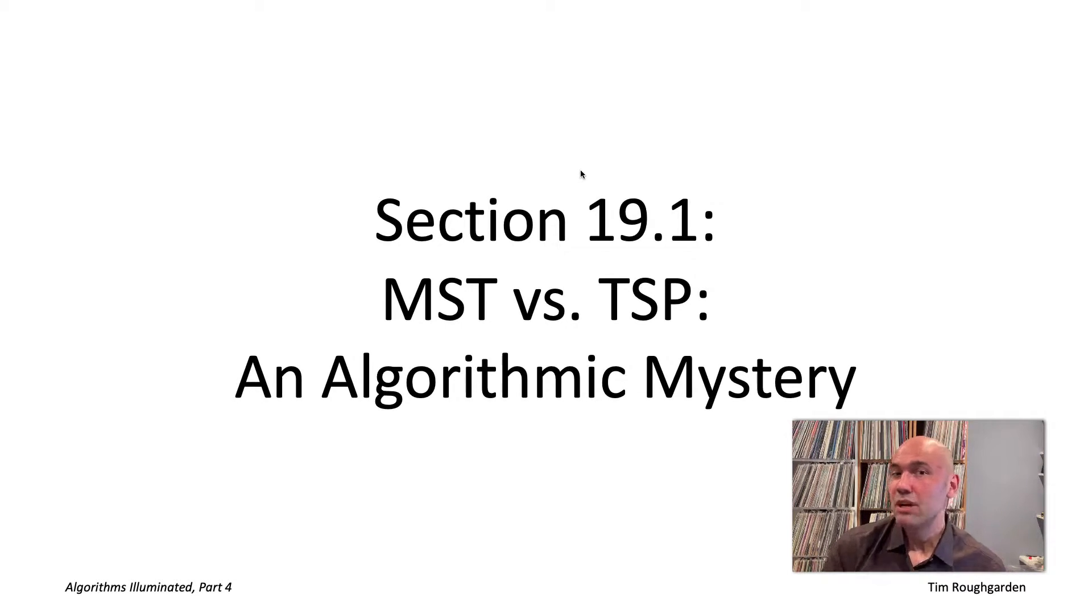Now, many introductory books on algorithms, including the first three parts of algorithms illuminated, suffer from a sort of selection bias. They focus on problems where there are always correct and always fast and usually quite ingenious algorithms. Because after all, what's more fun and empowering to learn than a clever algorithmic shortcut? Unfortunately, this cherry-picked collection of problems misrepresents the reality where the specter of computational intractability haunts the algorithm designer.